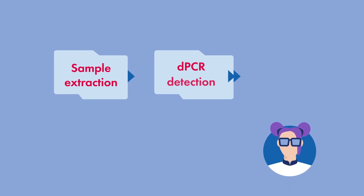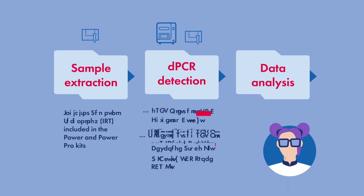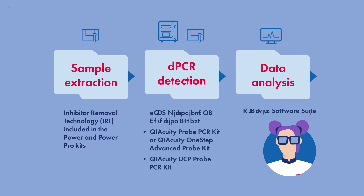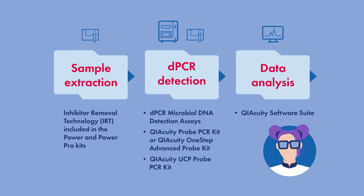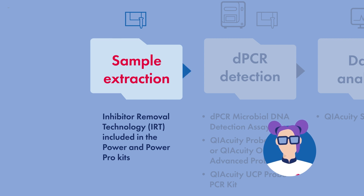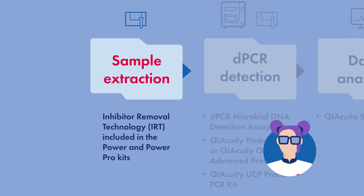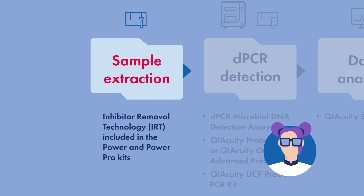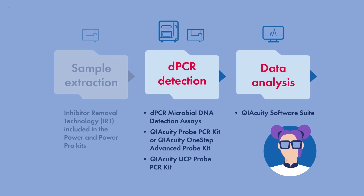Your laboratory can benefit from Qiagen's standardized, sensitive, and fast microbial detection workflow. Patent-pending inhibitor removal technology, IRT, is included in DNeasy, RNeasy, AllPrep, and QIAamp Power and Power Pro Kits — available manual or automated — to successfully remove inhibitors during nucleic acid purification.